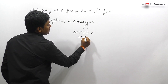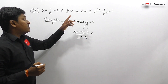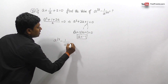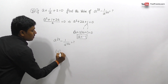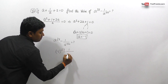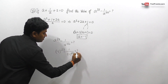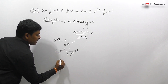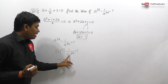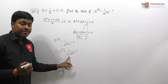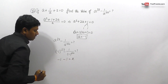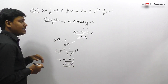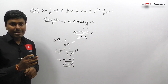Substituting a equals minus 1: (minus 1)³⁷ minus 1 divided by (minus 1)¹⁰⁰. Since 37 is odd, (minus 1)³⁷ equals minus 1. Since 100 is even, (minus 1)¹⁰⁰ equals plus 1. So the expression equals minus 1 minus 1 equals minus 2. The answer for question 22 is minus 2.